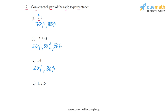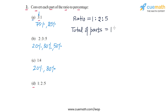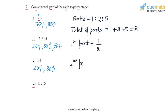Finally, we come to part D, in which the ratio is 1 is to 2 is to 5. The total of parts is 1 plus 2 plus 5, or 8. The first part as a fraction will be 1 by 8, the second part will be 2 by 8, and the third part will be 5 by 8.